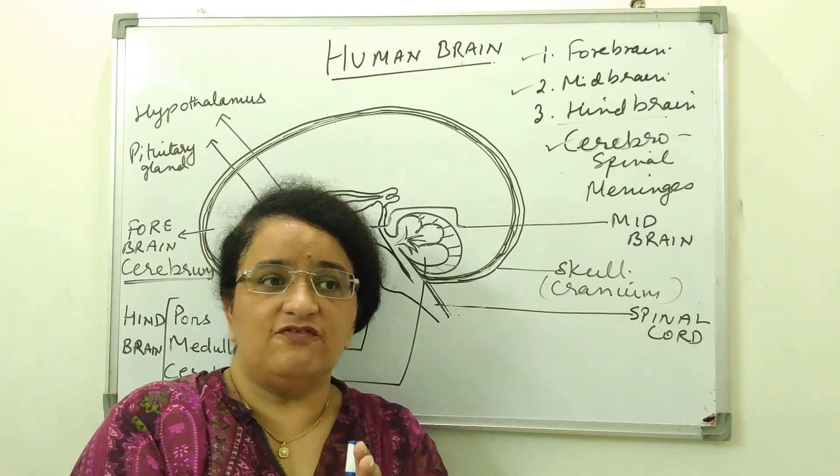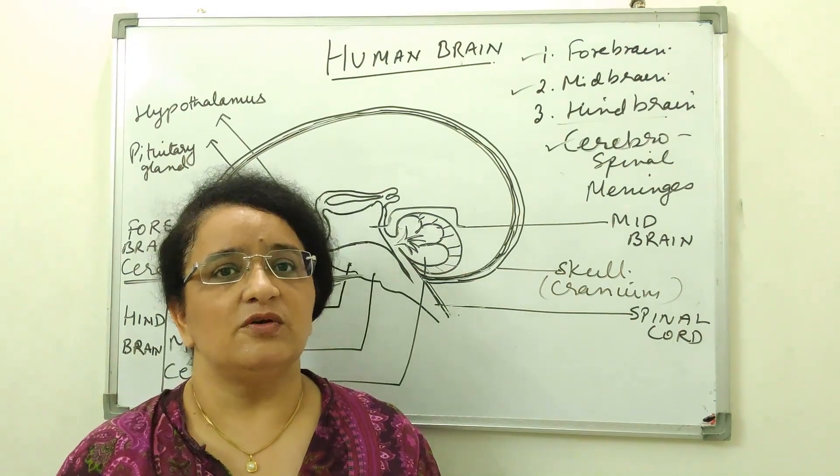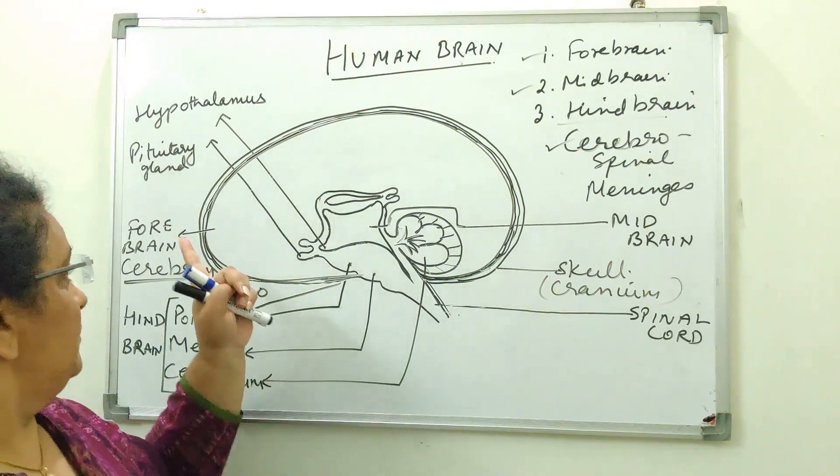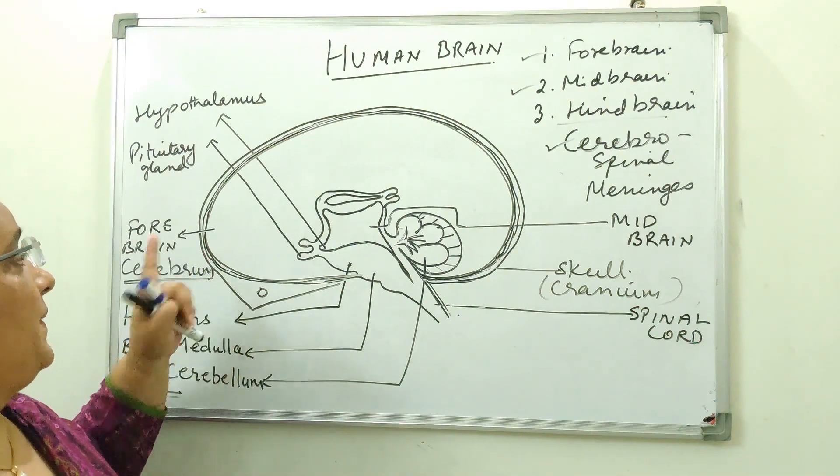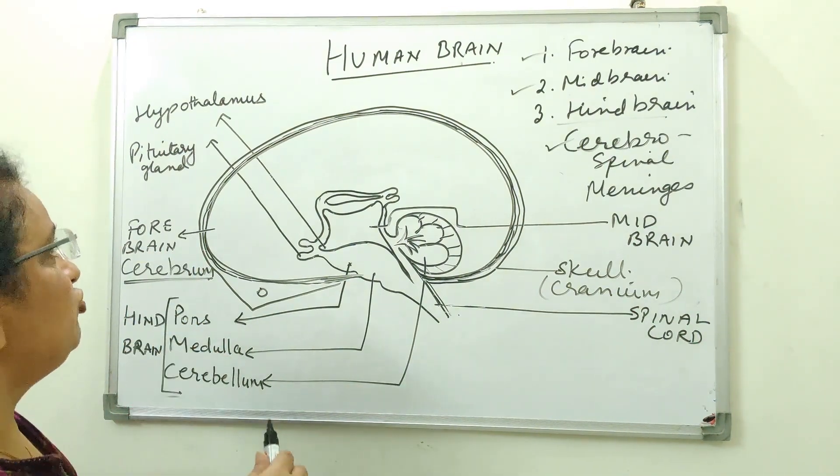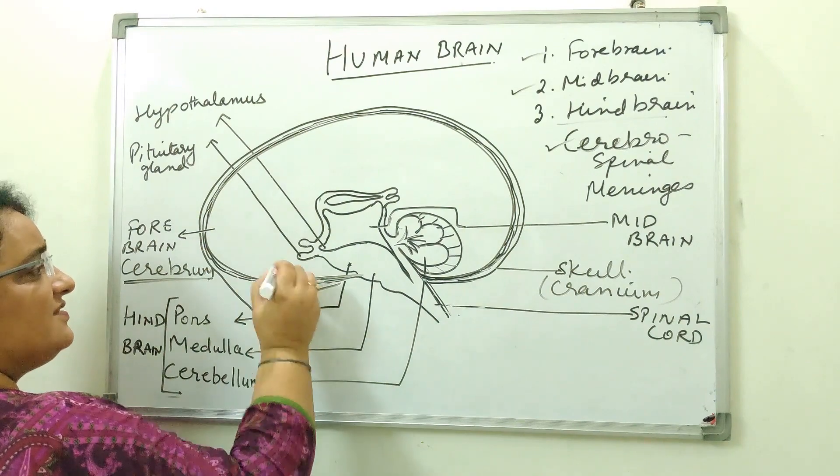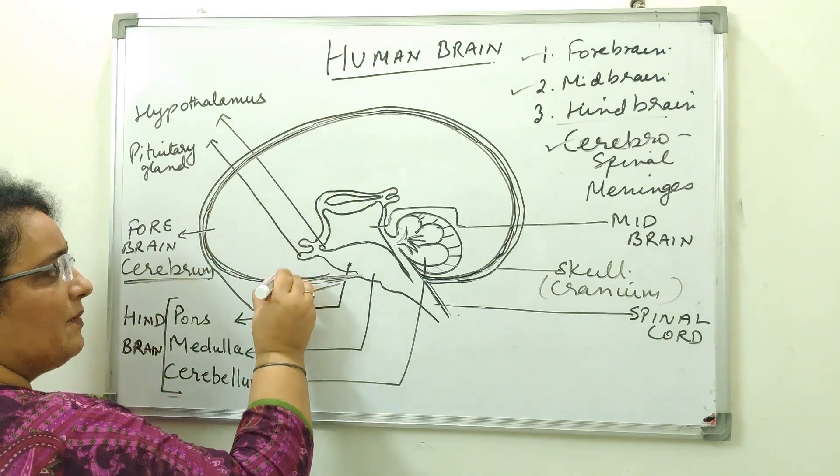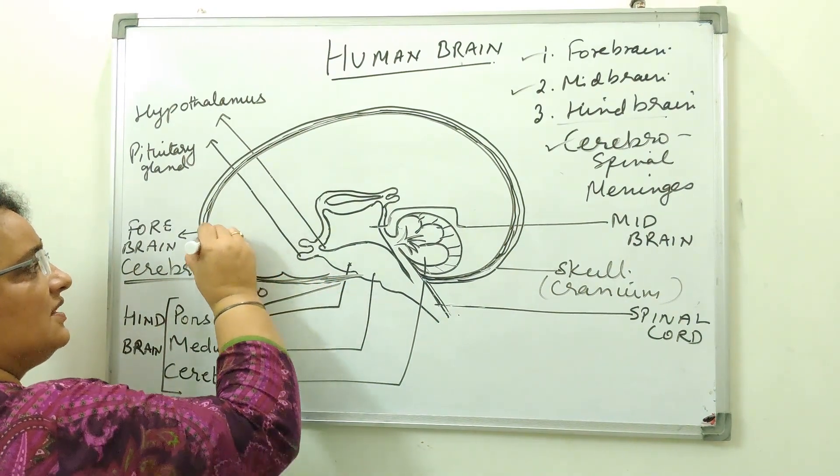And you see inside the walnut, when we open the walnut, it is in the form of different folds. So the brain is also like that. Now this fold brain, how to draw this, the folds. Now see how I am making this semicircles.